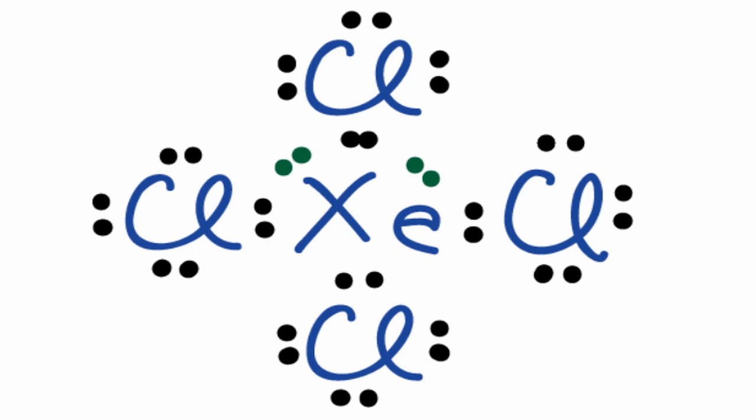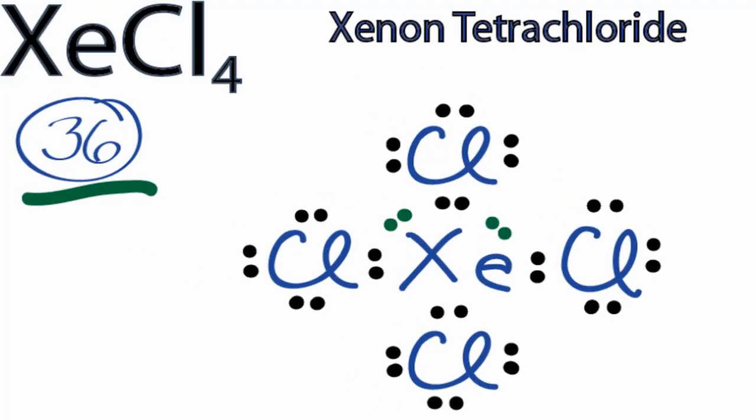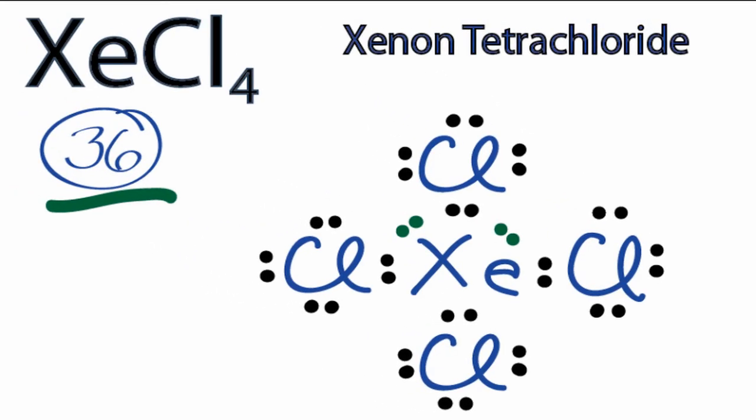So we've used all 36 valence electrons. The chlorines have octets. And that xenon atom, it has 12 valence electrons, but that's okay because it can have an expanded octet. So this is the Lewis structure for XeCl4, and this is Dr. B.